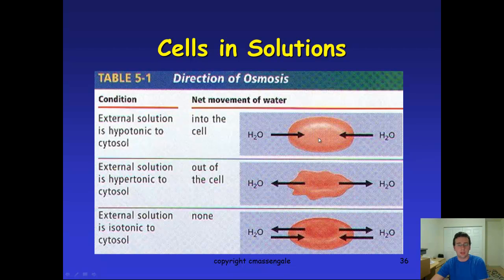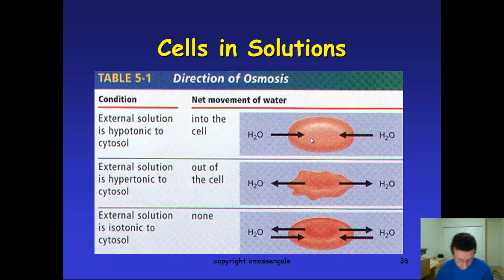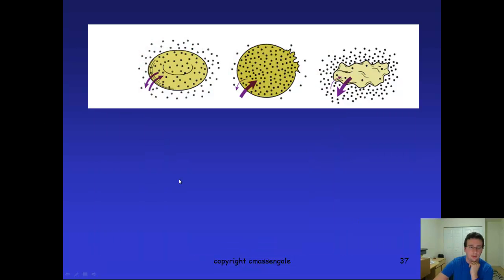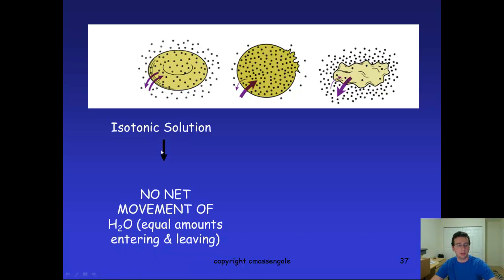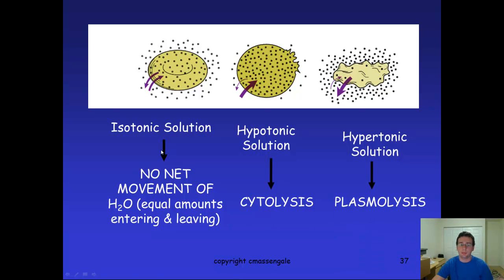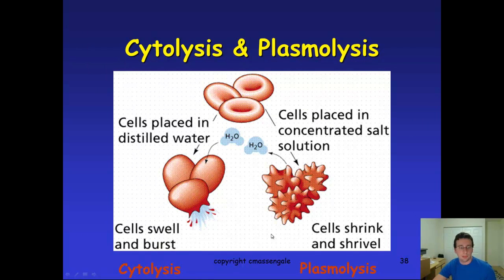The first process — where water rushes in — is called cytolysis, because if it keeps going the cell could pop. The middle process is called plasmolysis, because what's breaking down is not the cell itself but the plasma — you're losing the plasma while in cytolysis the cells are being broken. The third scenario is equilibrium. So: isotonic gives you equilibrium, hypotonic gives you cytolysis with water coming inside, and hypertonic gives you plasmolysis as water leaks out.